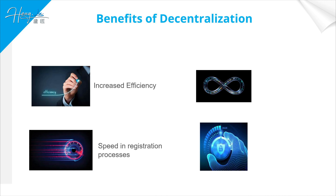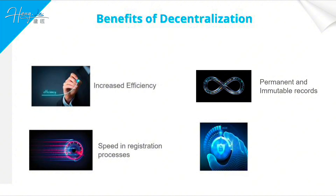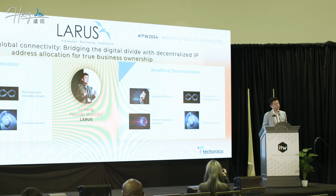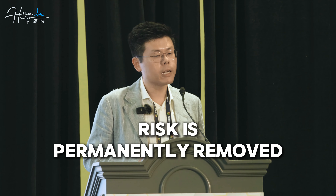Obviously, the registration process is also sped up, same as the transfer process. And the most important thing, meaningful to most of the large corporations here, is permanent and immutable records. In today's setup of regional internet registries — those five private companies — your company's survival depends on one of those five regional registries. If they want to shut you down, they can actually shut down the entirety of your data business. But with distributed ledger, because everybody owns the record and because it is distributed across the entire internet, such risk is permanently removed.